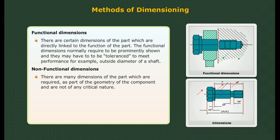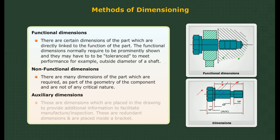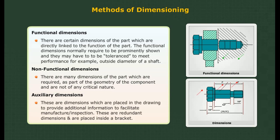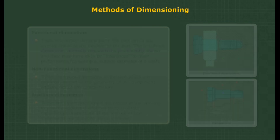Auxiliary dimensions: These are dimensions placed in the drawing to provide additional information to facilitate manufacture or inspection. They are redundant dimensions and are placed inside brackets.